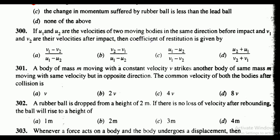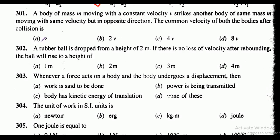Question 300: if u1 and u2 are velocities of two moving bodies in the same direction before impact, and v1 and v2 are their velocities after impact, then the coefficient of restitution is given by — the correct answer is option B, that is v2 minus v1 upon u1 minus u2.